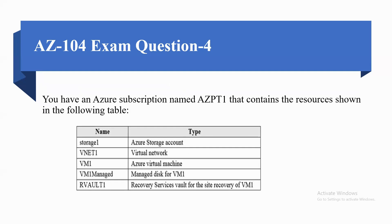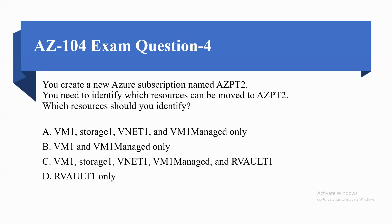Question four: You have an Azure subscription named AZ51 that contains resources as shown in the following table — Storage1 (Azure Storage Account), VNet1 (Virtual Network), VM1 (Azure Virtual Machine), VM1 Managed Disk, and RVault1 (Recovery Services Vault for site recovery of VM1). You create a new subscription named AZ52. You need to identify which resources can be moved to AZ52. Which resources should you identify?